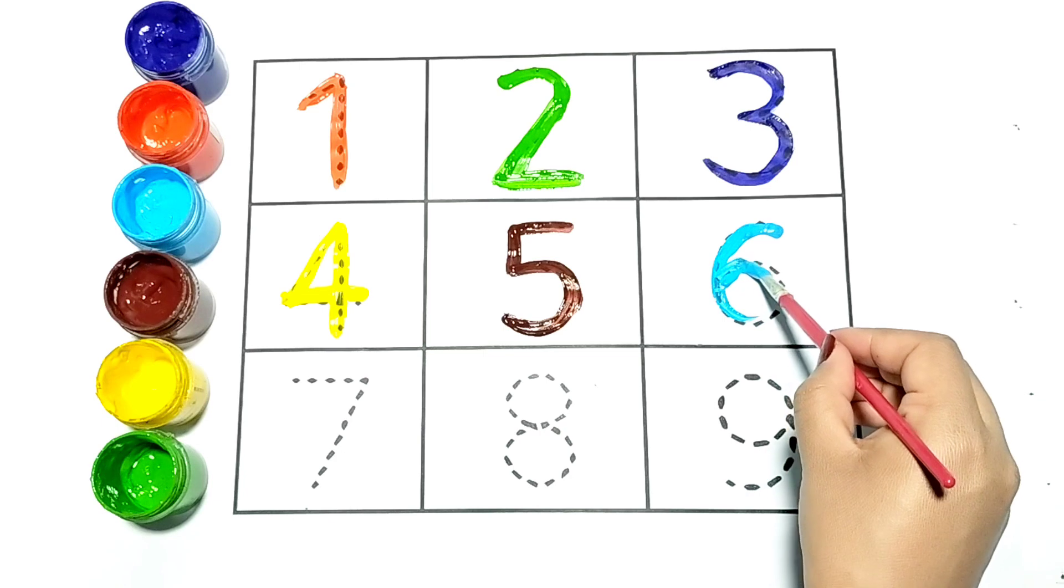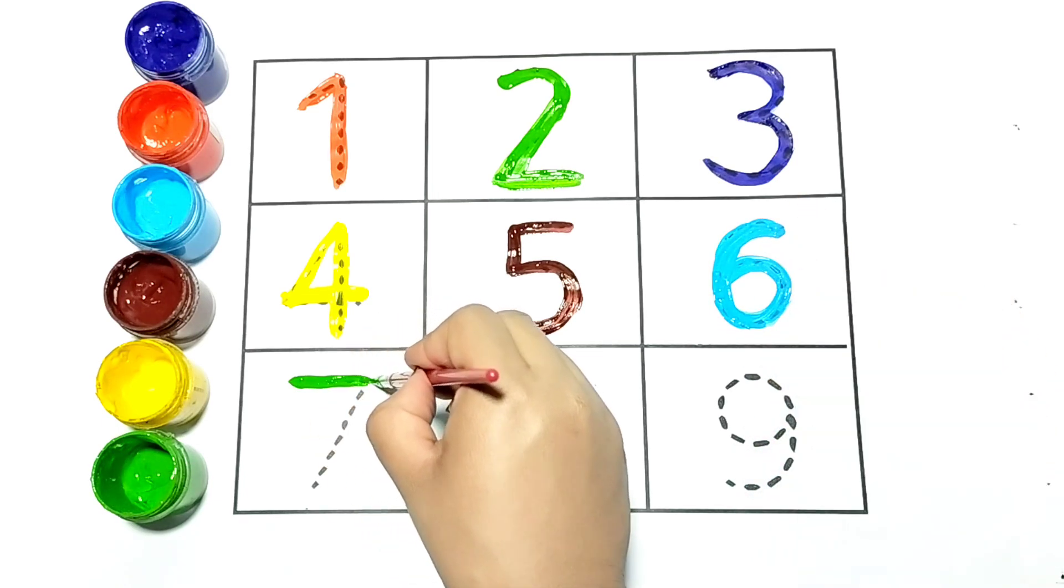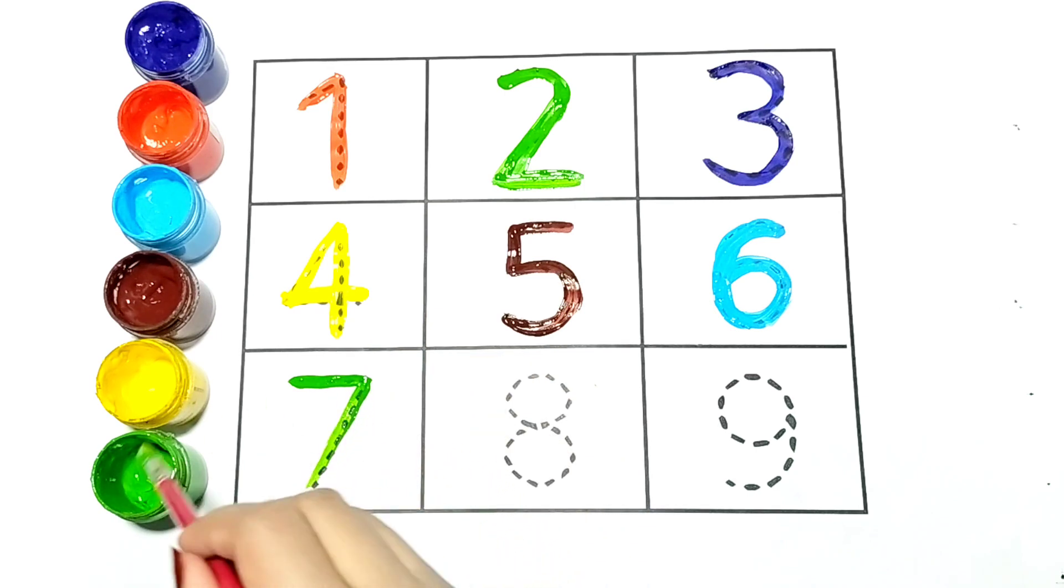Now I am writing 6 with blue color. Let's write number 7. It is green in color.